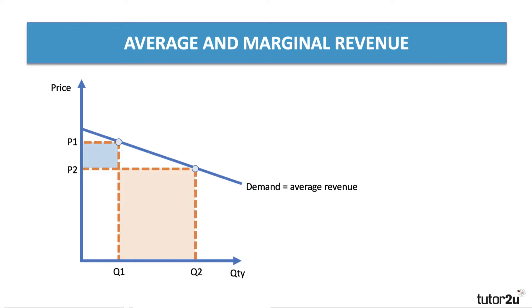But the marginal revenue isn't P2, because to sell the extra units from Q1 to Q2, we've had to lower the price from what it was before. But the marginal revenue will be positive, albeit falling. And this is how we draw marginal revenue — you don't have to prove it mathematically, but it has twice the gradient of the demand curve and falls at that steeper rate.